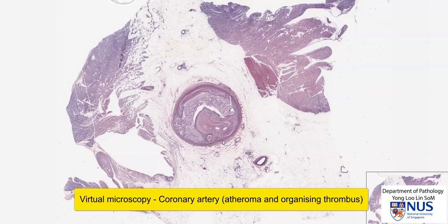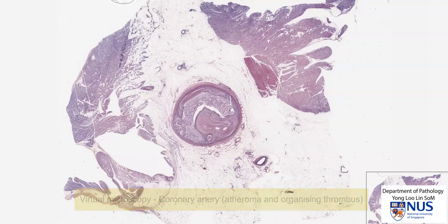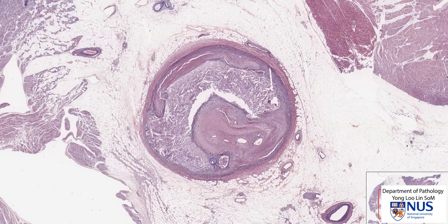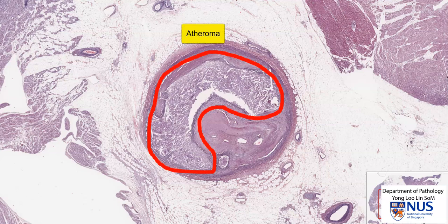The pathology that we're going to focus on is in this coronary artery, and it's actually a very abnormal artery. What's left of the lumen is actually over here, and this entire area here is a large atheroma.